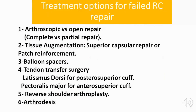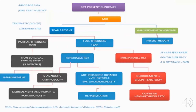Treatment options for failed rotator cuff repair include arthroscopic versus open revision repair, tissue augmentation through superior capsular repair or patch reinforcement, balloon spacers, tendon transfer surgery, reverse shoulder arthroplasty, and arthrodesis. The decision algorithm is: for MRI-identified partial thickness tears, conservative treatment for 3 months — if no improvement, proceed to diagnostic arthroscopy, debridement, repair, and acromioplasty. For a full thickness repairable tear, diagnostic arthroscopy and repair with or without acromioplasty followed by rehabilitation. For an irreparable rotator cuff tear, proceed to debridement and biceps tenotomy, considering joint replacement.